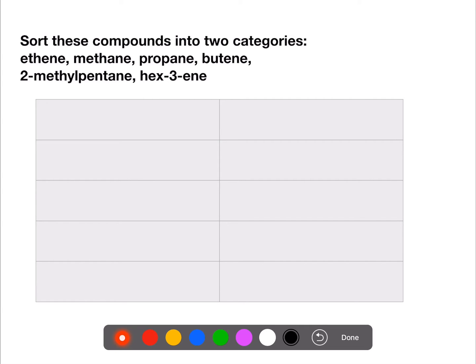The first heading you could choose would be to sort them into alkanes and alkenes. You could also choose to sort them into saturated and unsaturated.